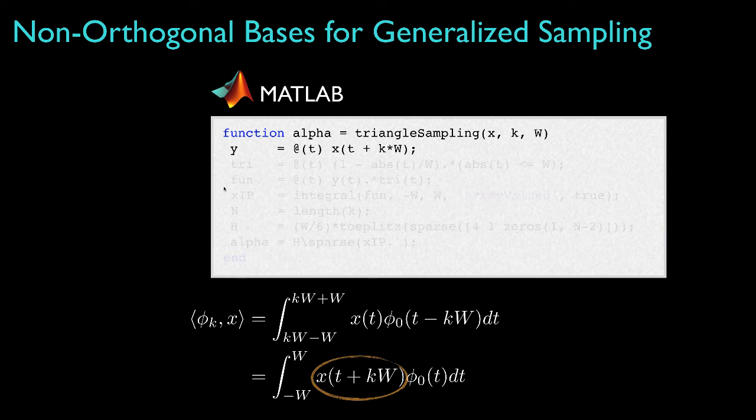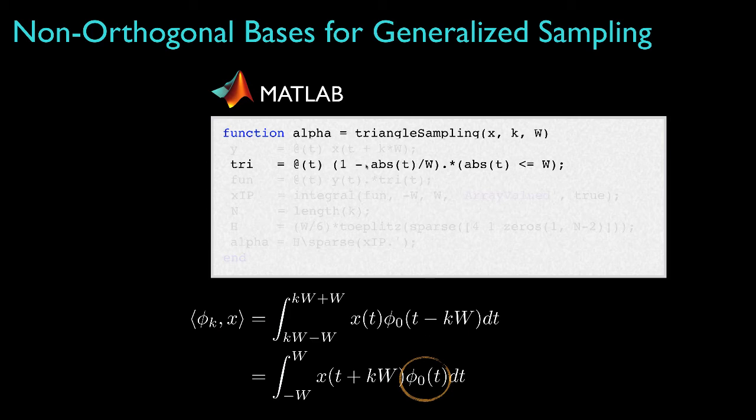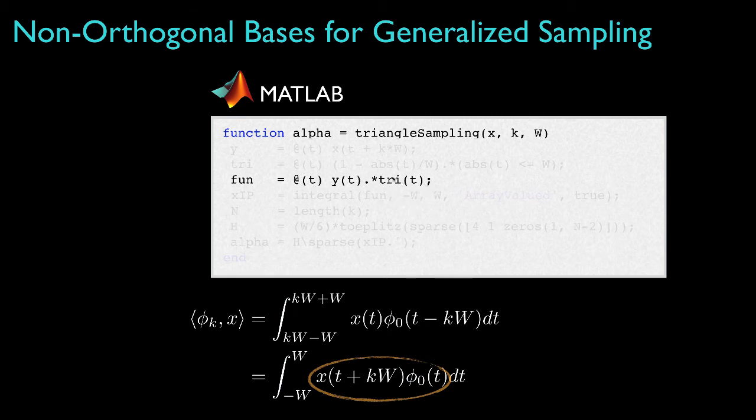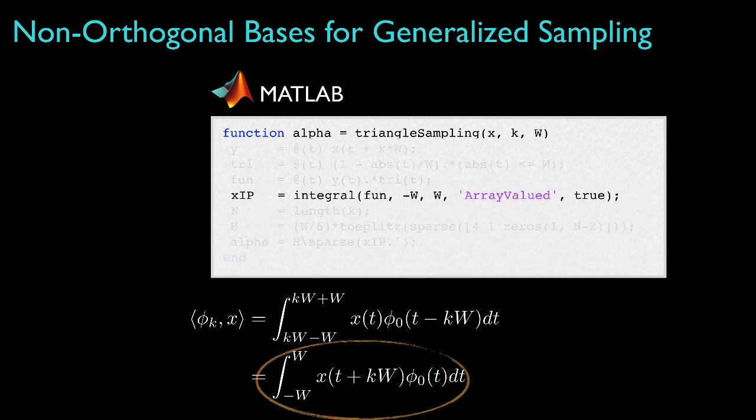To determine the k-th coefficient, I can either shift the basis function or the signal, as is shown in these two equations. For the purposes of implementing this code, it's much simpler to shift the signal that we're sampling. Therefore I create a new function y of t, and that's simply x of t shifted by k times the triangle's width. Then I create the fundamental triangle function of width w, and then I create another function that's the product of these two functions. Then I use MATLAB's function integral to carry out the integral over the interval from minus w to w.